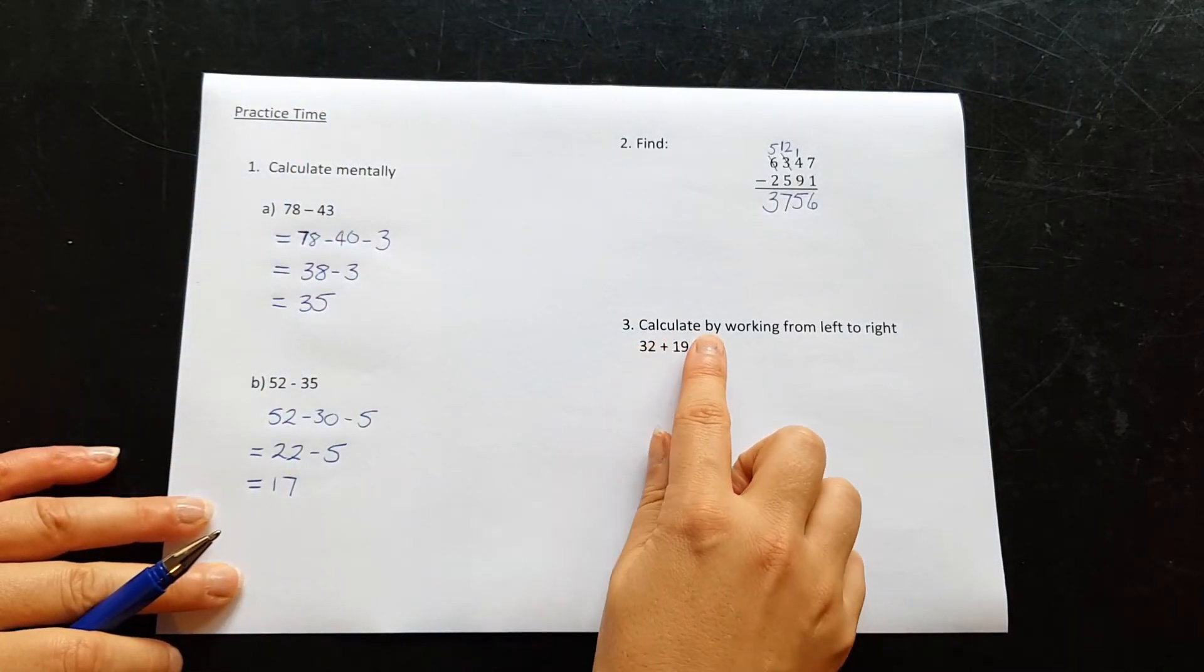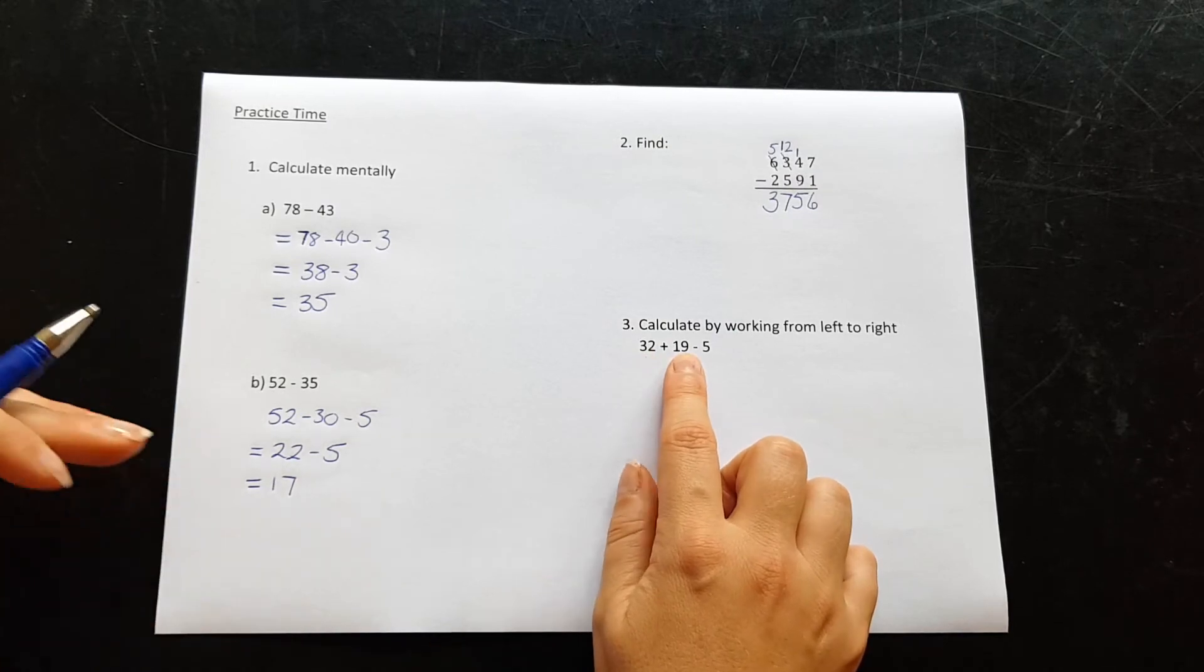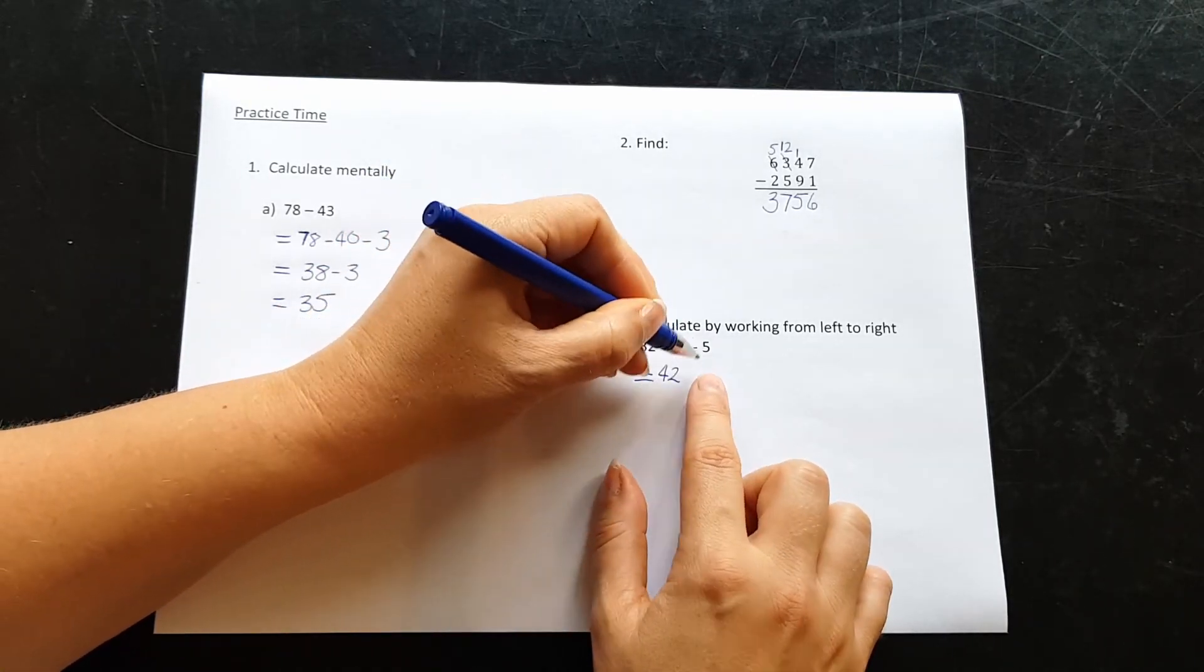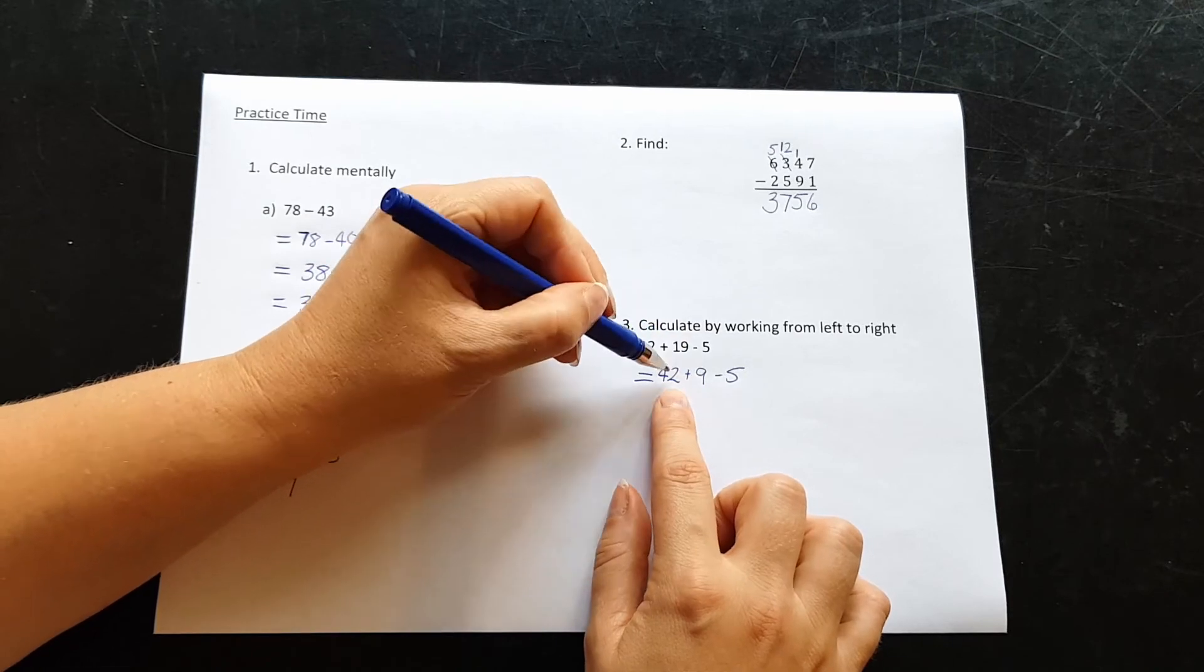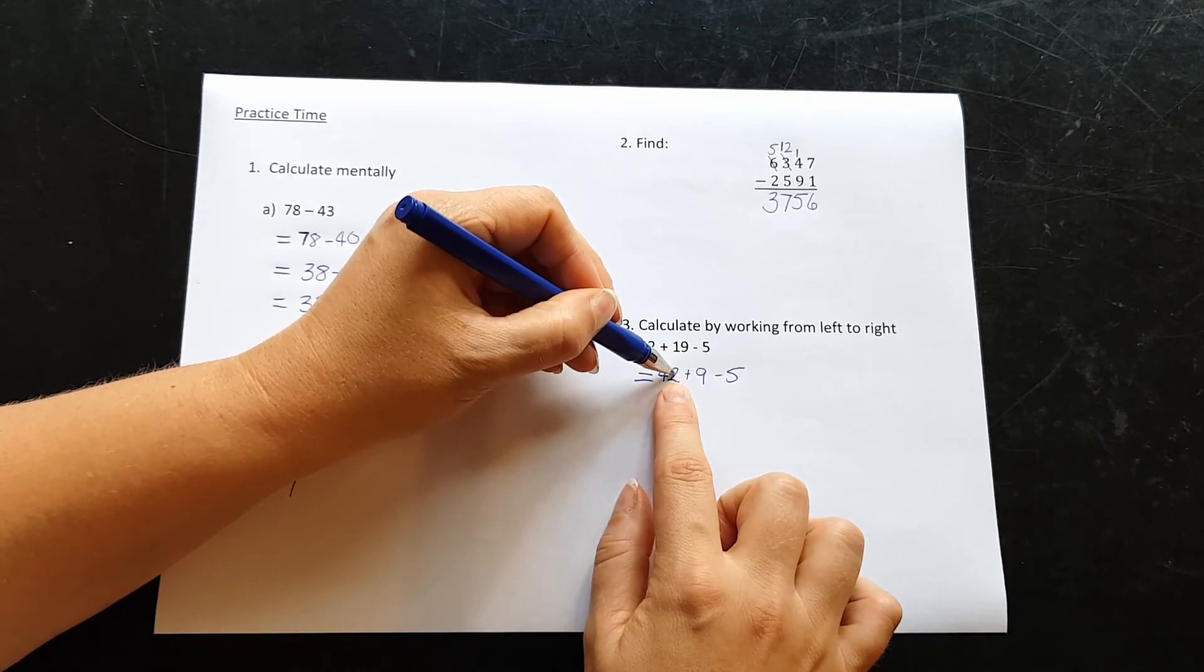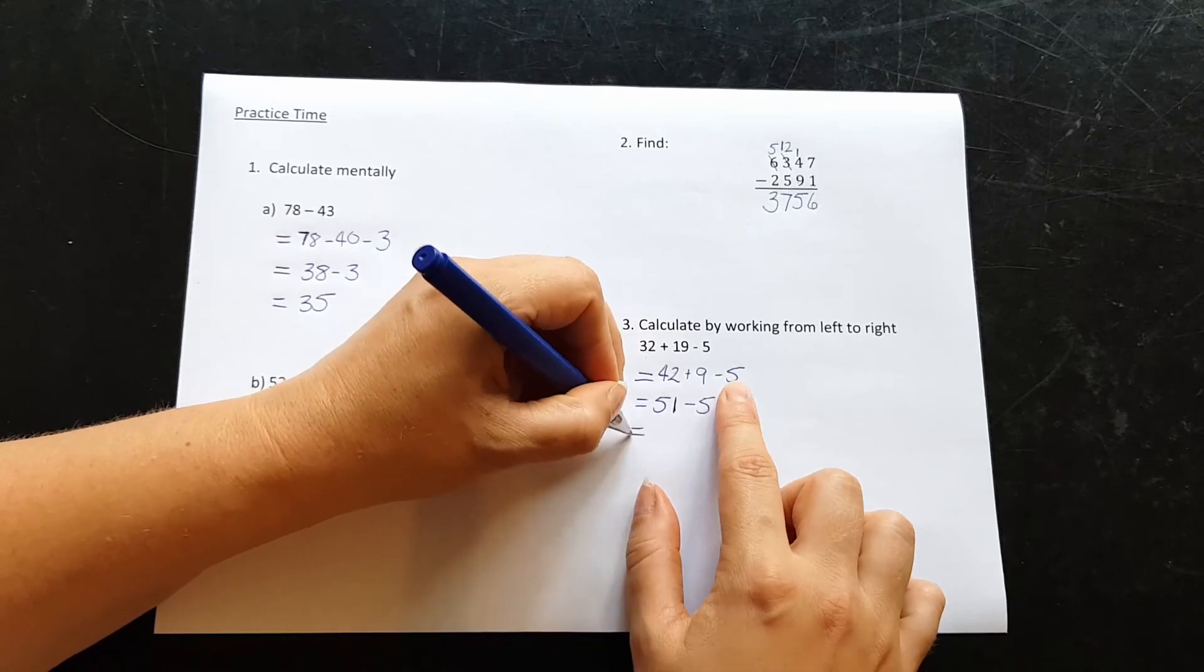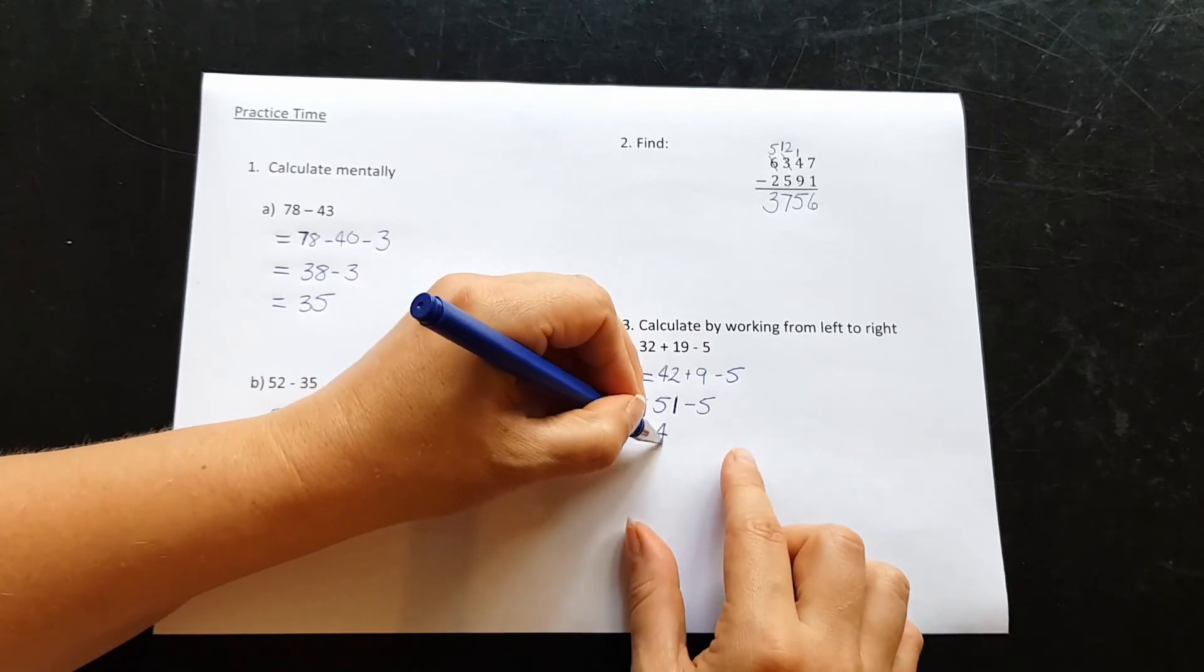And last question, calculate by working from left to right. 32 plus 19 minus 5. Starting with these two numbers, adding together. If I add the 10 on, I would get 42, and I still have the 9 and the 5. If I add the 9 onto here, we could take 8 of them to make this up to 50, meaning we would have one more left, making it 51. I still have to take away 5 though. I could take the 1 off, and I'd have 4 more to go backwards, making 46.